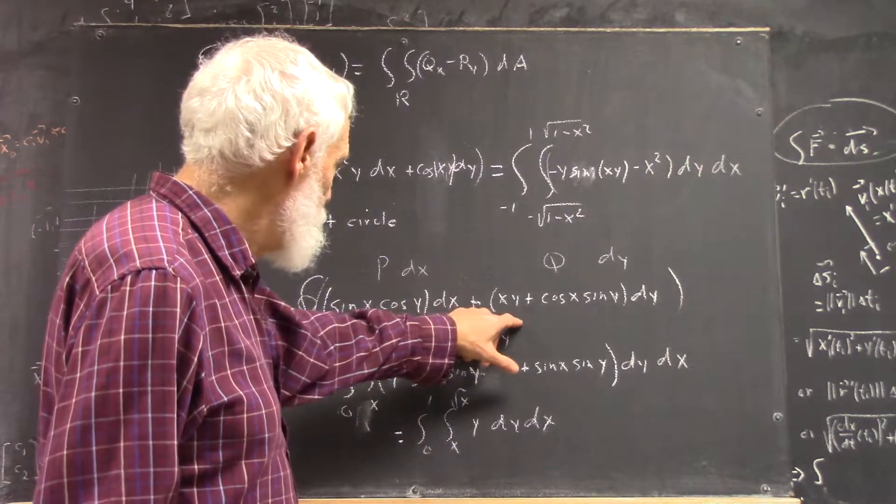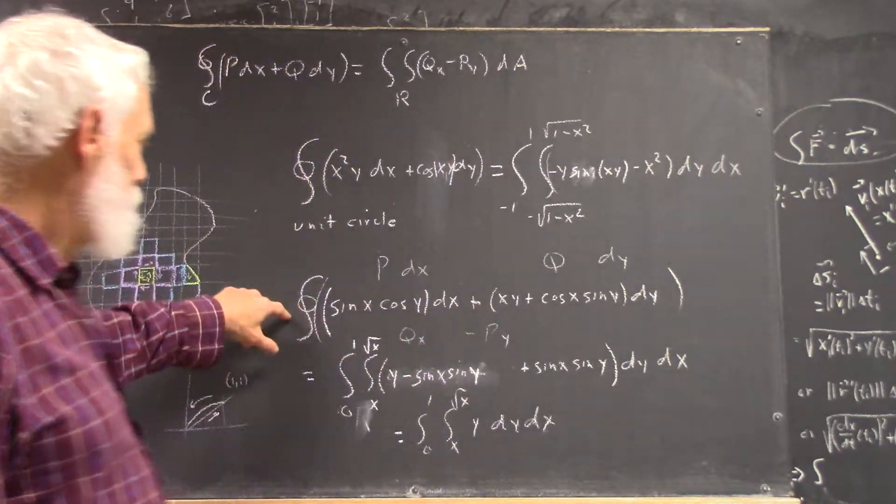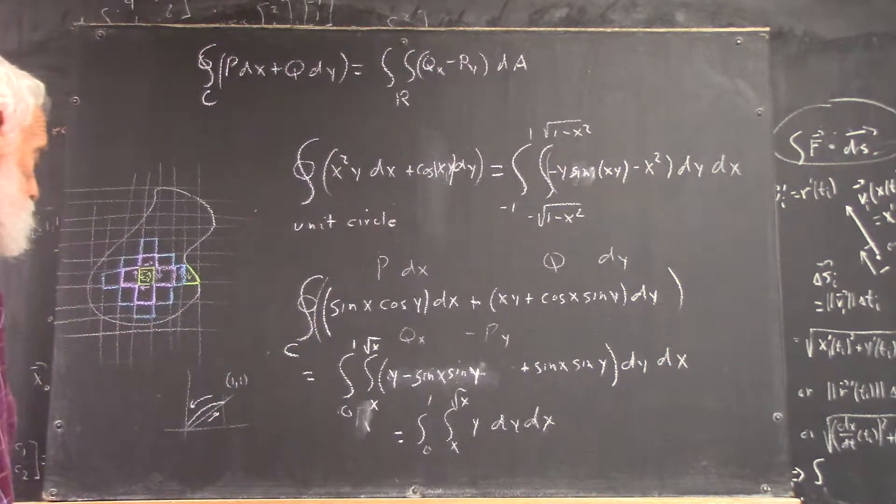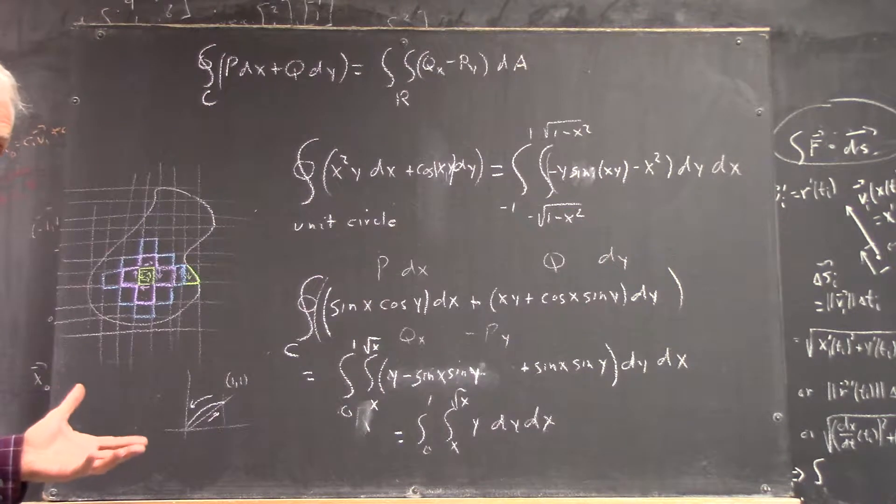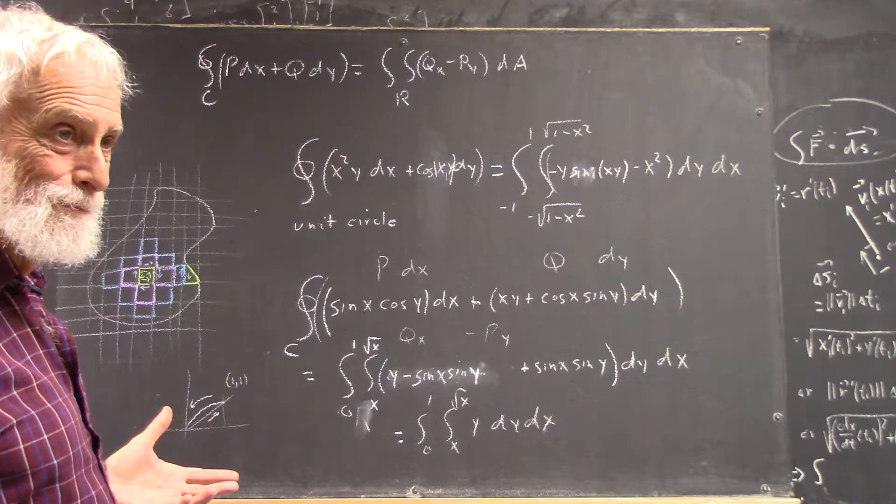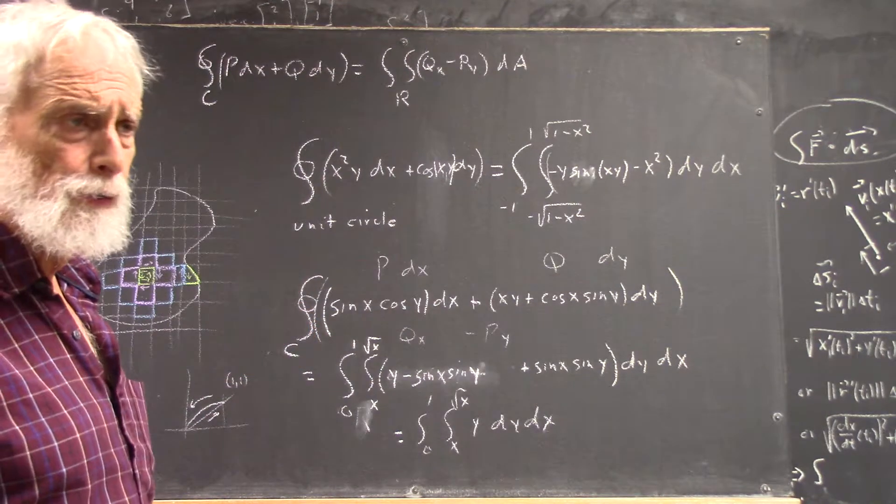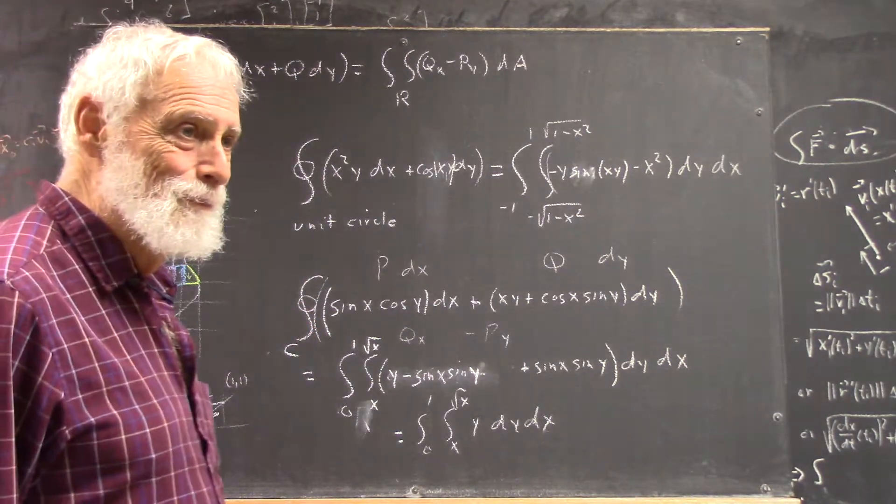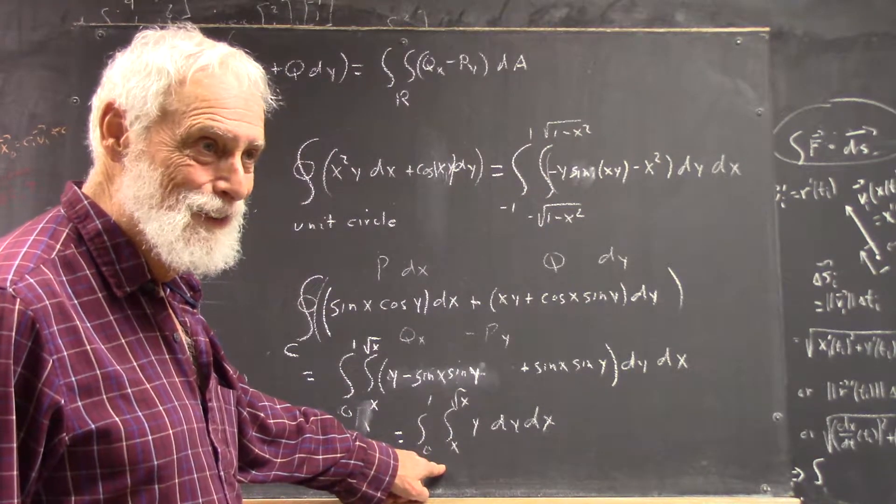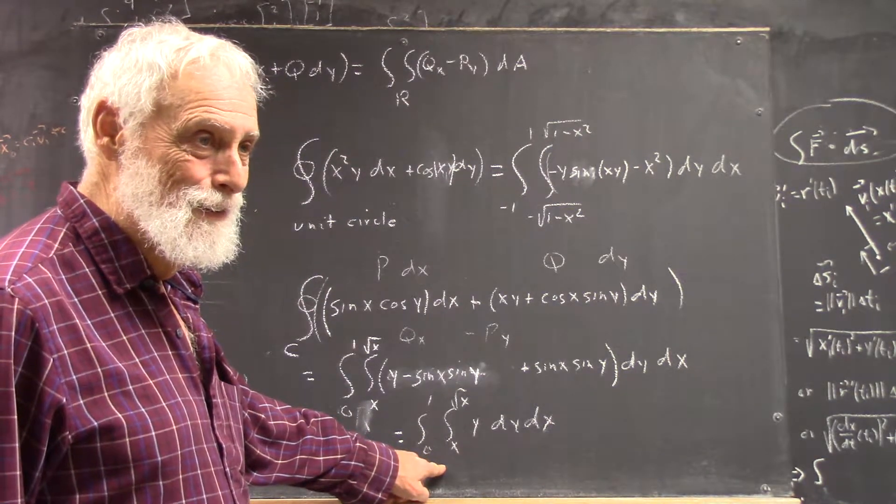So what you would end up with if you tried to do the path integral over the curve would be difficult or impossible because how do you integrate sine of square root of x? But this is really easy.